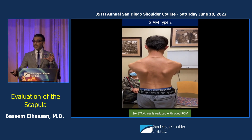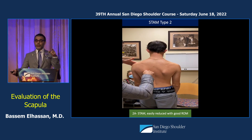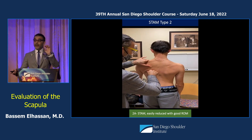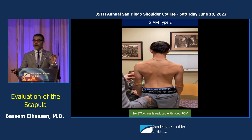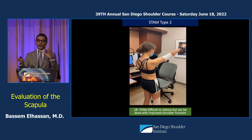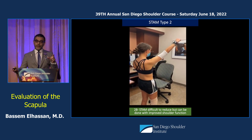Both 2A and 2B have significant STEM with attempted motion, but the difference is that in 2A it is very easy to reduce and the patient can get their motion back. Every patient with this kind of STEM has perfect periscapular muscle with no paralysis. In 2B, they have the same abnormality of scapulothoracic motion, but you cannot reduce the scapula easily — you have to push hard on it to be able to reduce it and get flexion up.